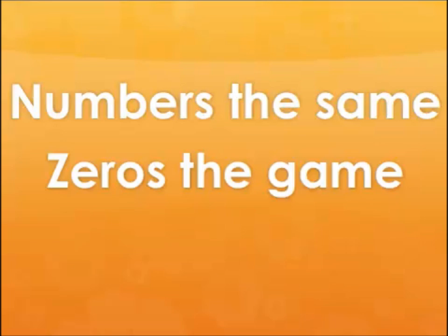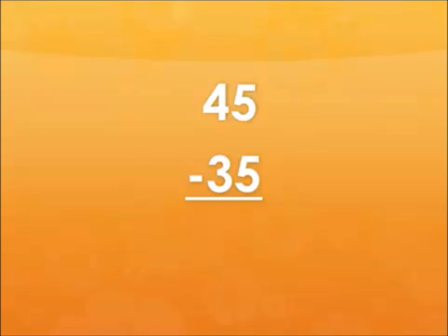Last but not least, numbers the same, zero's the game. Looking at the 1's place again, we all know 5 minus 5 is 0. So we can put a 0 in the 1's column and just subtract 4 minus 3, which we all know equals 1, giving us an answer of 10.